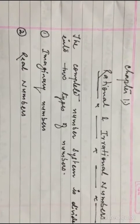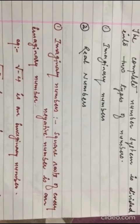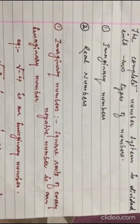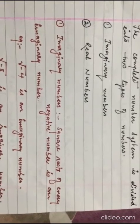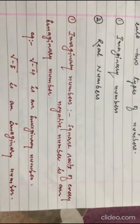Let us see the definition of imaginary number. Imaginary number is defined as the square root of every negative number is an imaginary number. For example, square root of minus 4 is an imaginary number.